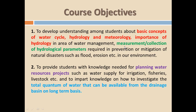Engineering hydrology has two objectives. Number one is to develop understanding among students about the basic concepts of the water cycle, hydrology, meteorology, importance of hydrology, and measurement and collection of hydrological parameters such as precipitation, evaporation, evapotranspiration, infiltration, runoff, and stream flow. These are all hydrological parameters.